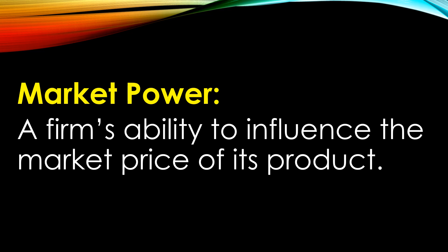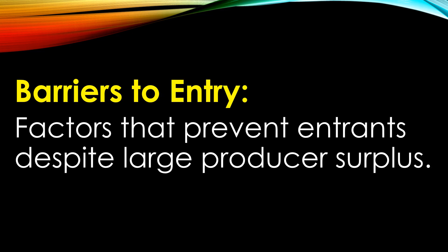Market power is a firm's ability to influence the market price of its product. We're no longer just a price taker. We can strategically set our price and try to get some surplus for the producer within that market. A key element of sustainable market power is that there must be something that keeps other competitors from entering and taking up that surplus, undercutting our prices, and not allowing us to keep the power and the surplus of the situation where we have market power. Barriers to entry are factors that prevent these entrants, despite having that large producer surplus to entice other people to want to come into that market. There are different types of barriers to entry, and that is what we will cover here.